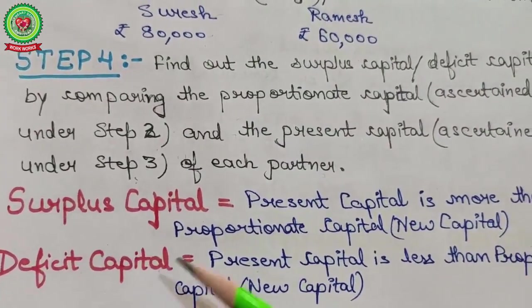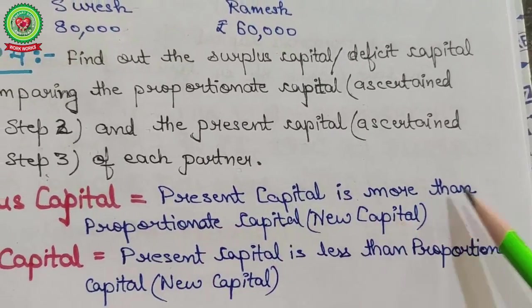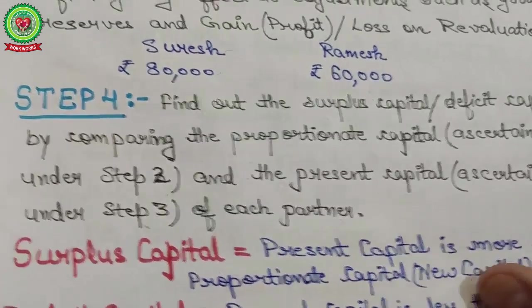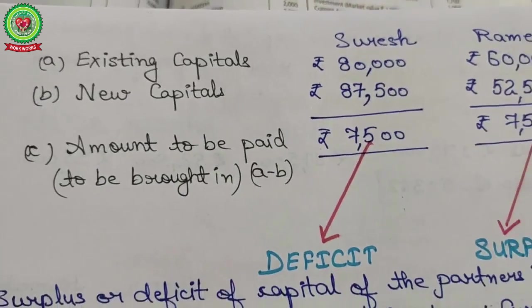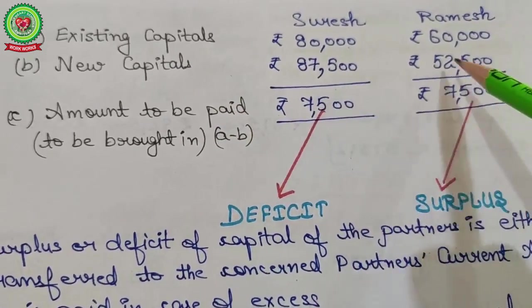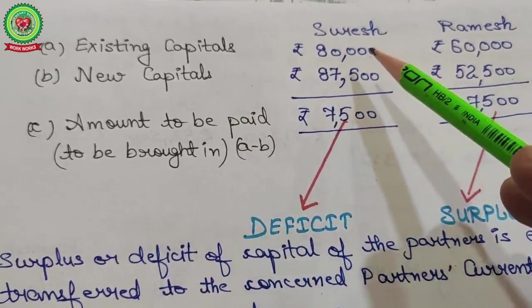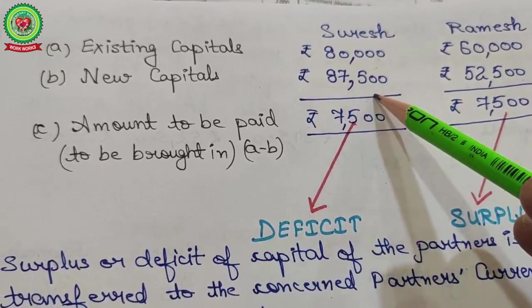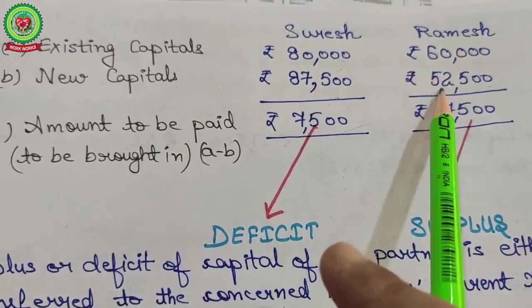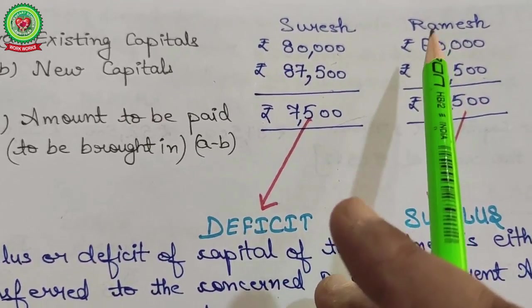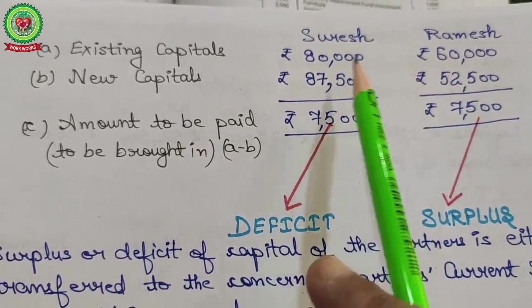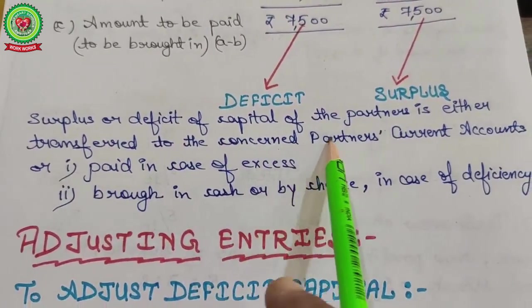Two situations arise — surplus or deficit. Surplus: present capital is more than proportionate capital. Deficit: present capital is less than proportionate capital. Comparing: Suresh's existing capital is ₹80,000 but required is ₹87,500 — deficit of ₹7,500. Ramesh's required capital is ₹52,500 but his existing capital is ₹60,000 — surplus of ₹7,500.